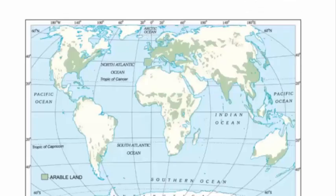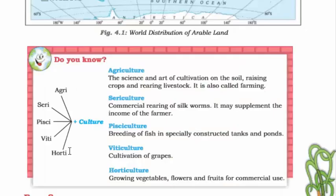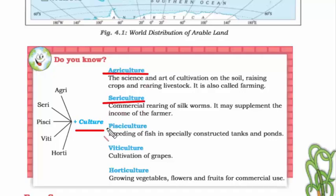If you look at this world map, it shows the world distribution of arable land — meaning land which supports agriculture and is fertile enough to grow crops. In terms of primary activity, there are five types of culture: agriculture, sericulture, pisciculture, viticulture, and horticulture.